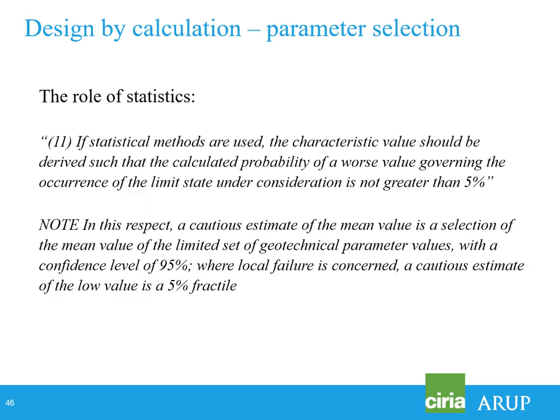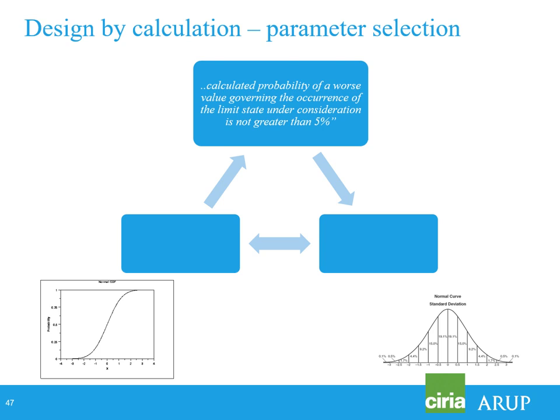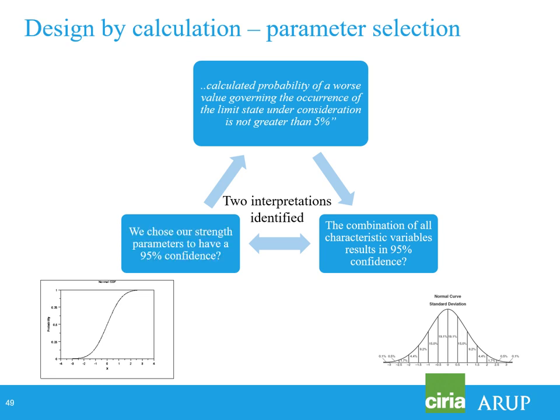Is there a role for statistics? The code says if statistical methods are used, the characteristic value should be derived such that the calculated probability of a worse value governing the occurrence of the limit state is not greater than 5%. We came up with two interpretations: either the combination of all characteristic variables resulting in 95% confidence, or each individual parameter must have 95% confidence. The second interpretation caused the most consternation — everyone thought they'd now have to go for a 95% confidence limit, making designs much more conservative.